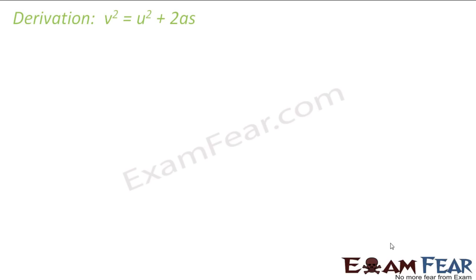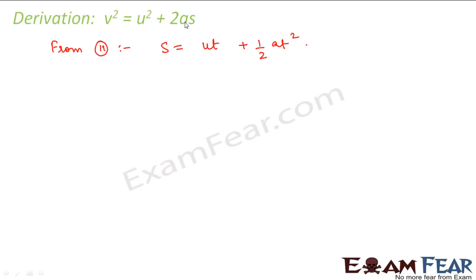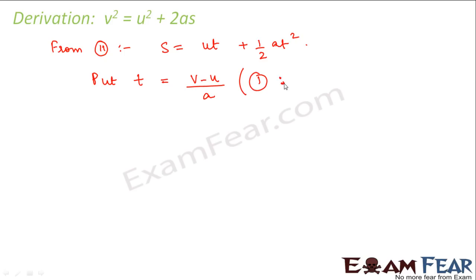Now let us derive the third equation: v² = u² + 2as. From the second kinematic equation, S = ut + ½at². We need an equation that excludes t. From the first equation v = u + at, we get t = (v − u) / a. We substitute this value of t into the second equation.